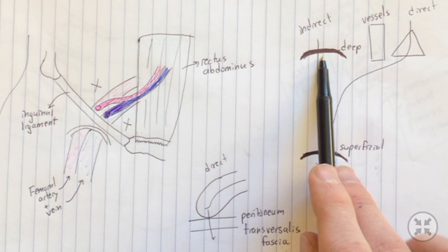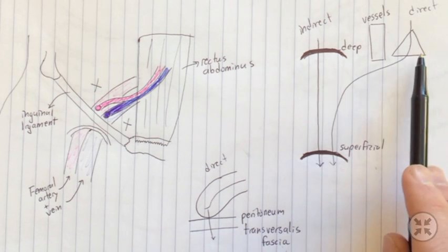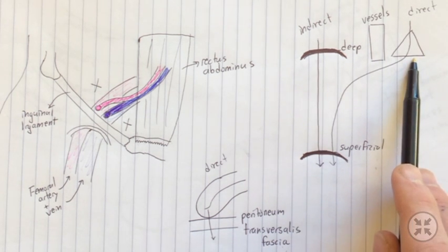So what I'm saying here is that both the direct and the indirect hernias pass through the superficial inguinal ring. Only the indirect pass through the deep inguinal ring. The direct will pass through Hesselbach's triangle.